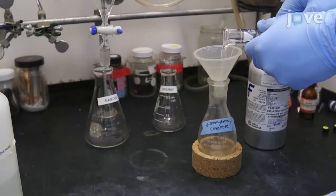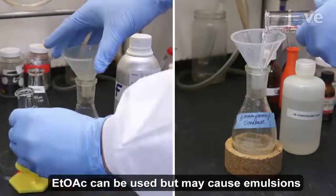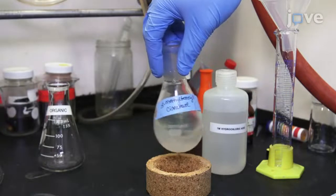To the residue, add 20 milliliters each of diethyl ether and 1 molar hydrochloric acid. Swirl the flask to dissolve the residue into the solvent layers.